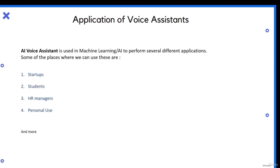Now, what are the different applications? Startups are a very good example for AI because there is a huge amount of workload. We can automate parts like sending emails or opening things so that the workload of people can be brought down. Students like you can develop your own personal assistant to flaunt with friends. HR managers who are busy sending mails can just speak a word and the mail will be sent. And for personal use, you can build and automate your own computer.